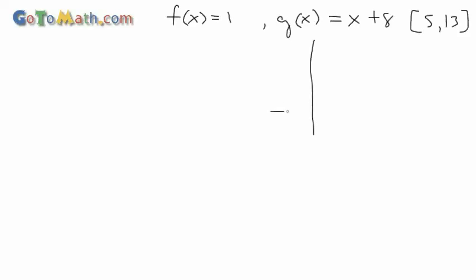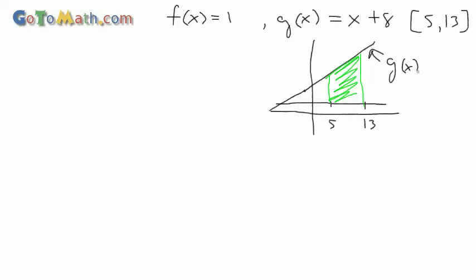I was going to skip this part, but maybe I shouldn't. I'm going to do a rough sketch here. This is our f(x) and our g(x) is up here at x + 8. This is not going to be to scale because I want to get everything on the graph. We'll say this is 5 and this is 13. Good enough.